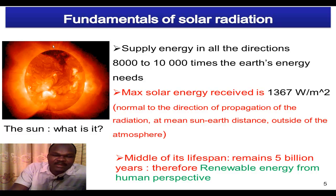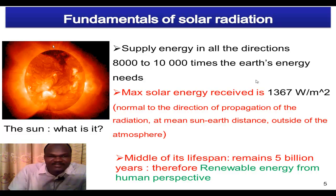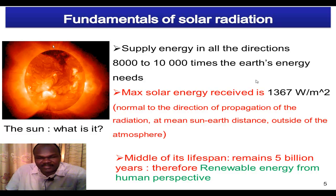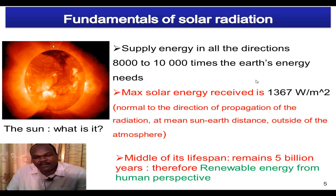Talking about the lifespan of the sun, it's believed that the sun has a 10 billion year lifespan, and it remains 5 billion years for the sun to live. It's a reaction taking place, and as any reaction, if you don't replace the combustible material, the reaction would end someday. So the sun will die out someday. When you talk about renewable energy, renewable energy is something that you can renew within the lifespan of a human being.